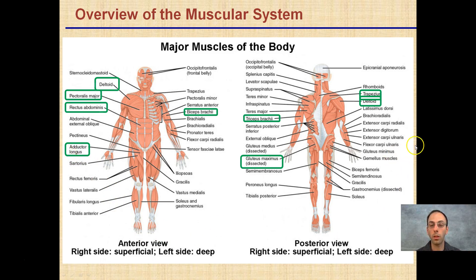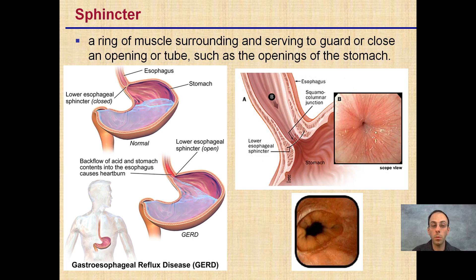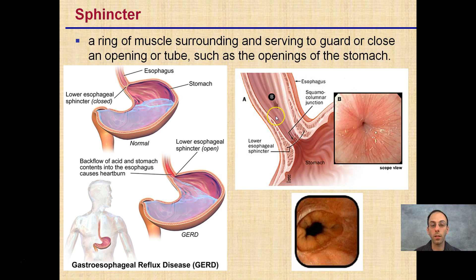Adductors — how do those move? You can see all the other ones that, for right now, I'm leaving out for the identification quiz. Sphincter is one I do want you to be able to recognize. It's a little hard to show because it's an internal muscle. It's actually a ring of muscles surrounding and serving to guard or close an opening of a tube, such as the openings of the stomach. This is our lower esophageal sphincter in its closed and opened versions. It's open when we want food to pass into the stomach, but it's closed so stomach acid doesn't get into our esophagus. If you've suffered from heartburn, you may have an improperly closing esophageal sphincter, which allows acid to get into the esophagus, creating that burning sensation.